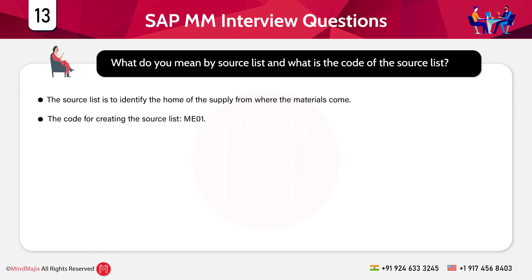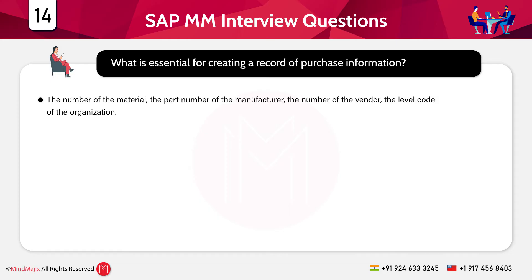The next question is: what is a source list and what is its code? The source list identifies the source of supply from where materials come. The code for creating a source list is ME01. For creating a purchase information record, the essential fields include the material number, manufacturer part number, vendor number, and organization level code.